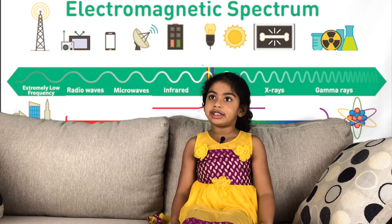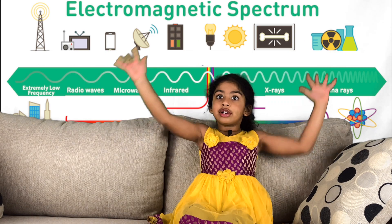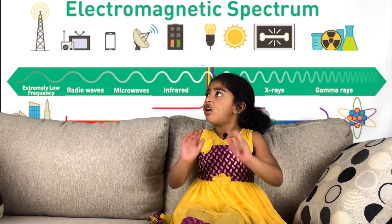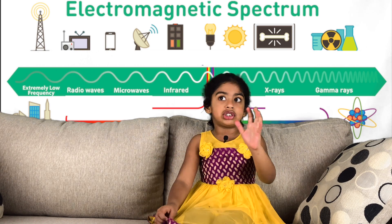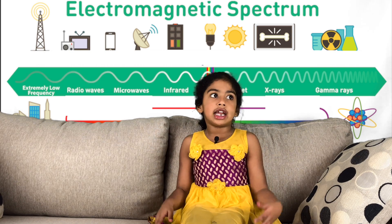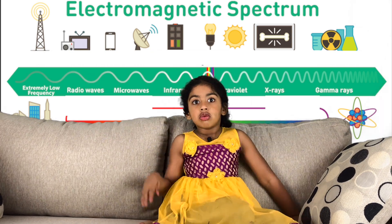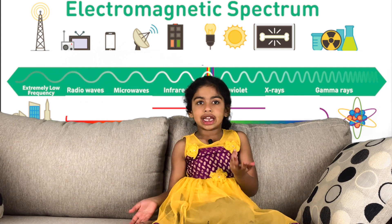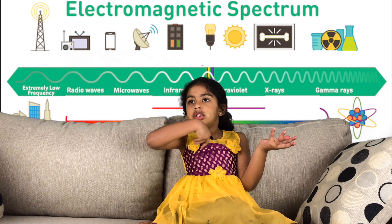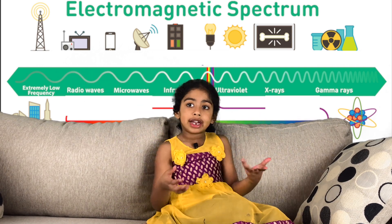Electromagnetic waves are everywhere — even right now in this room there are lots of electromagnetic waves. If you're messaging someone a hundred miles away, in just a blink of an eye it's there on their phone. Just like electricity can flow through some things like water but not others, electromagnetic waves can pass through some things but not others.